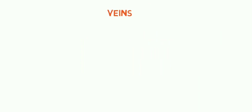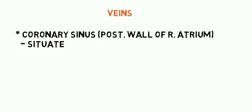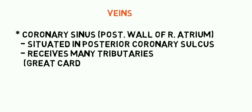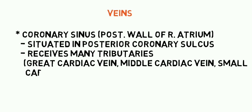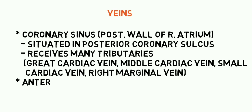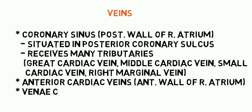Let's see about the venous drainage of the heart. Most of the venous drainage is by the coronary sinus, situated in the posterior coronary sulcus, which opens into the posterior wall of the right atrium. It receives many tributaries including the great cardiac vein, middle cardiac vein, small cardiac vein, and right marginal vein. There are also anterior cardiac veins which drain into the anterior wall of the right atrium, and small veins known as venae cordis minimae.